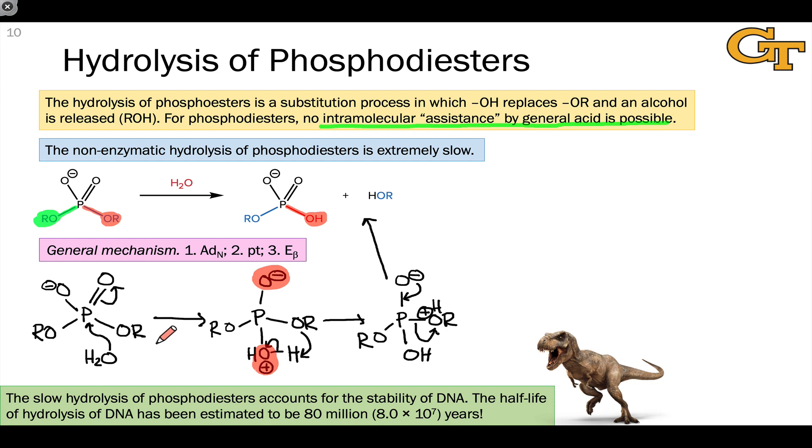The activation energy for hydrolysis of phosphodiesters is so high that it imparts an amazing stability to deoxyribonucleic acid. The half-life of hydrolysis of DNA, whose backbone consists of phosphodiesters, has been estimated to be 80 million years, that's 8 × 10^7 years. That's staggering. That means that we can still find DNA of the dinosaurs that has not yet decayed through hydrolysis.